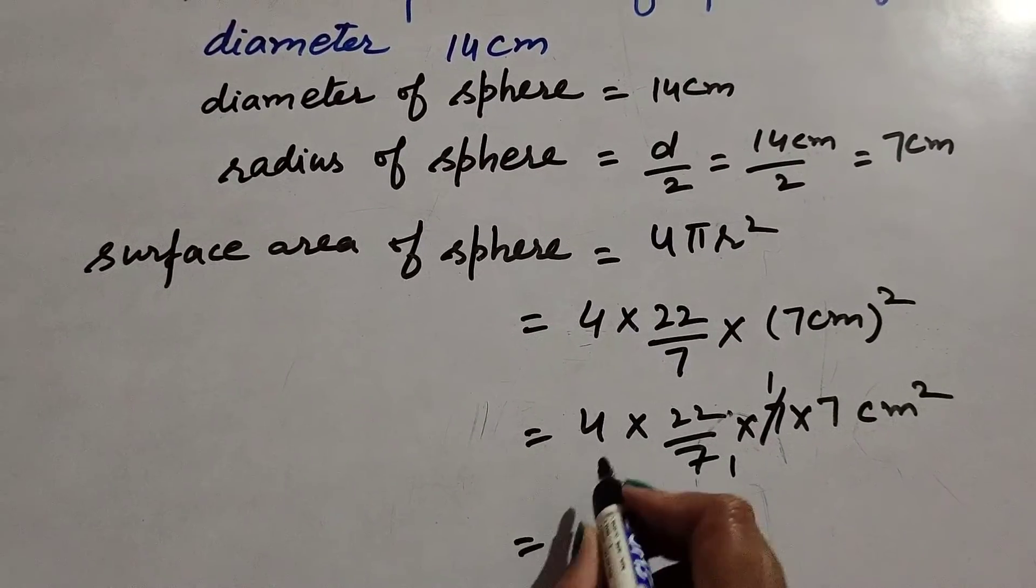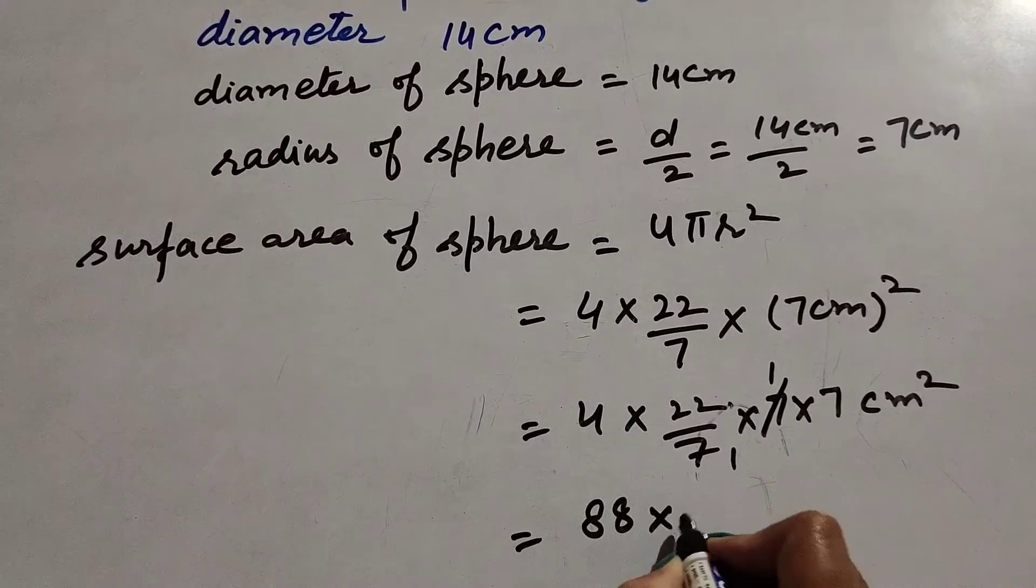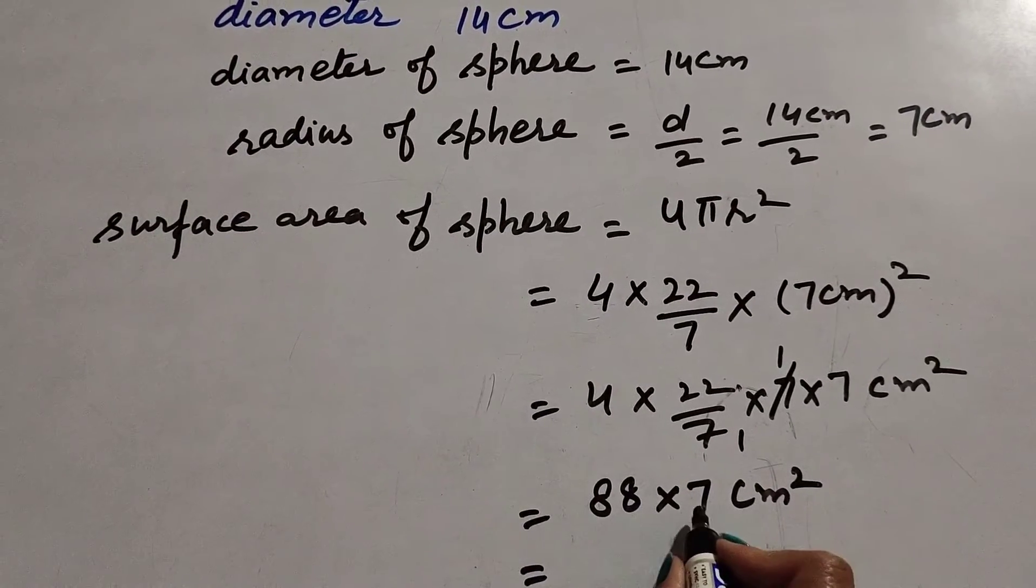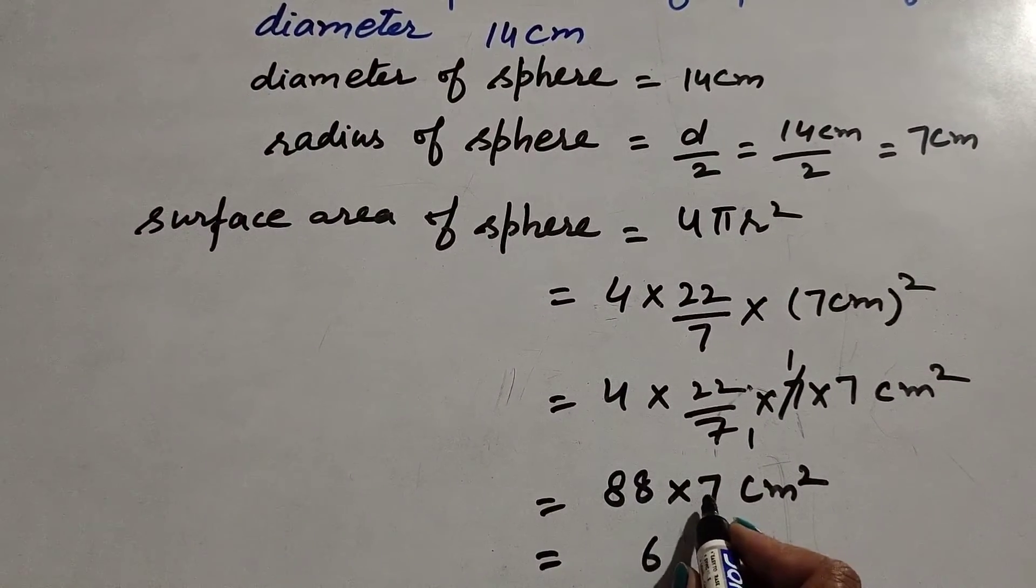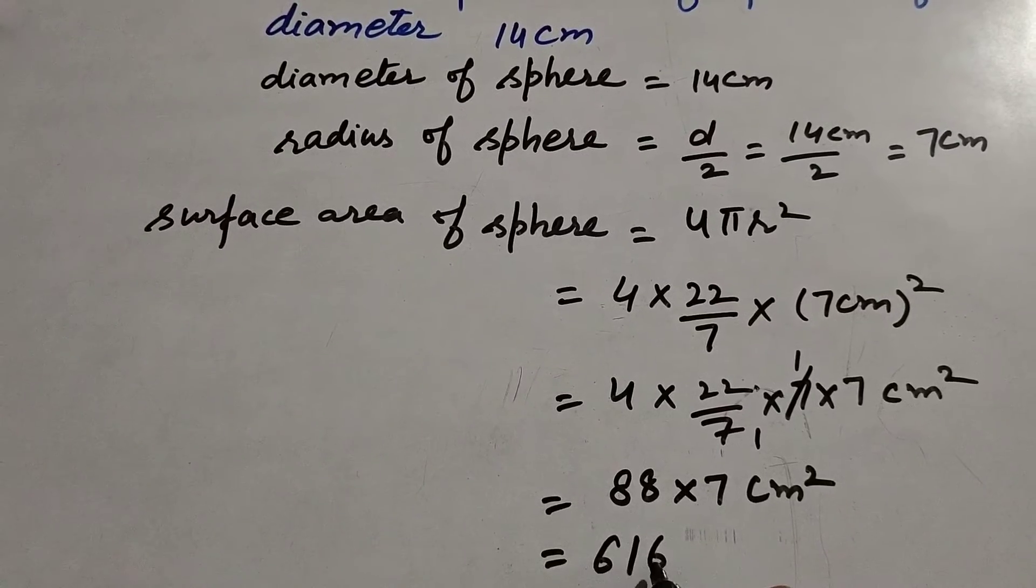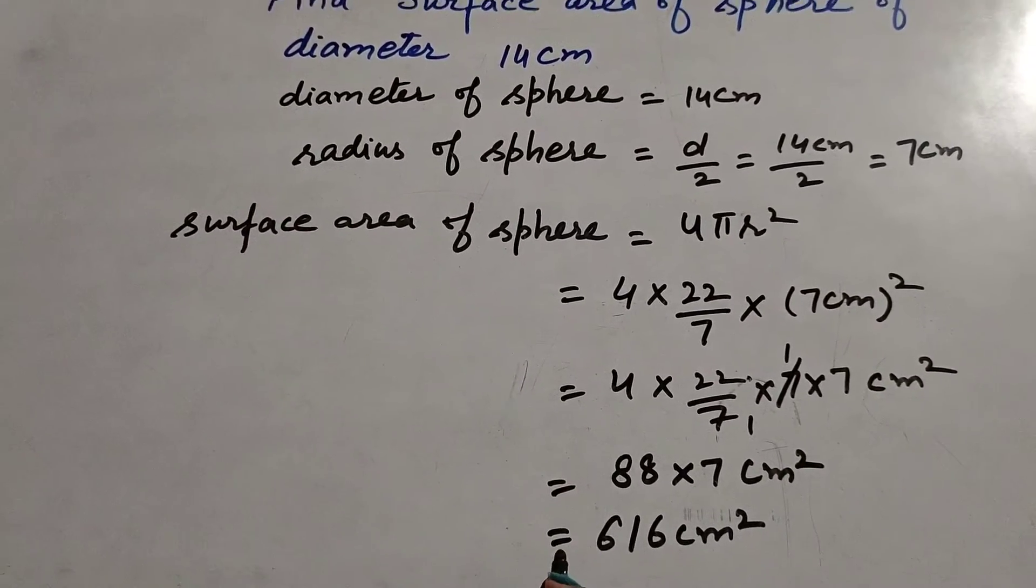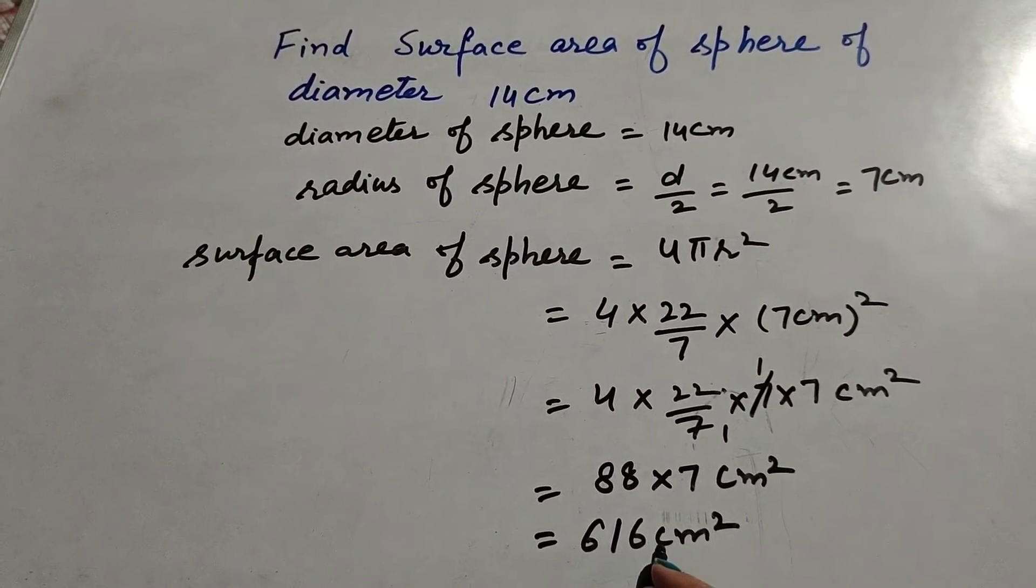Now 22 multiply by 4, we get answer 88 multiply by 7 centimeter square. So 88 multiply by 7, we get answer 616 centimeter square. So the surface area of sphere is 616 centimeter square.